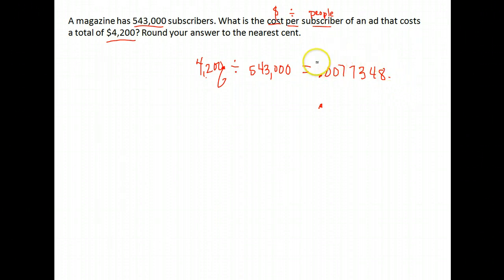Well, this is in money. They want us to round to the nearest cent. So where are cents? Remember, cents are two places after the decimal. Right now we have zero cents. But we round to the nearest cent, and so we look at the next number is a 7. That's bigger than 5, so we round up to 1. So the average cost per subscriber to advertise is 1 cent.